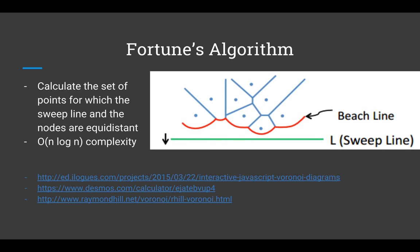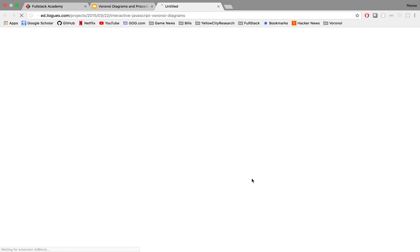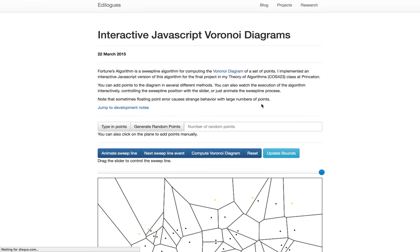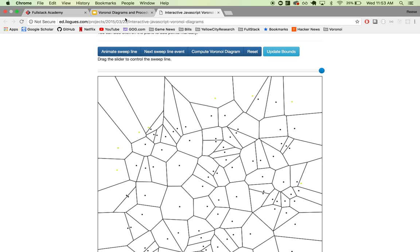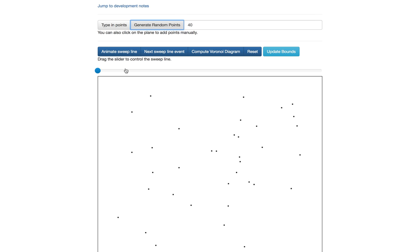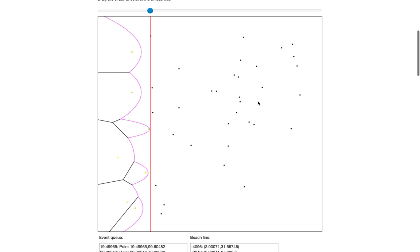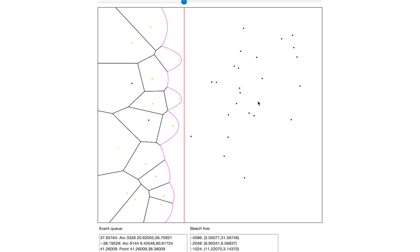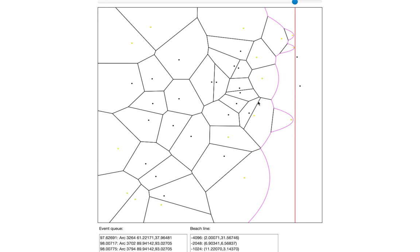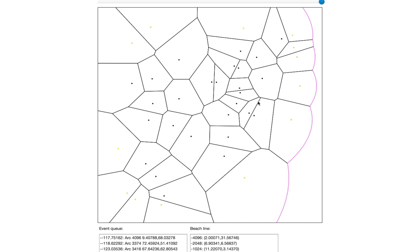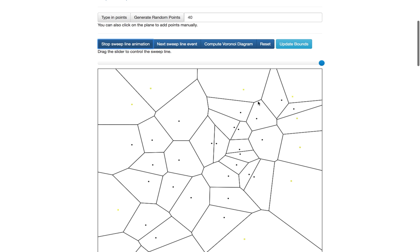So better than the flipping algorithms. These links are implementations of the algorithm, and they're pretty fun to play with. This one lets you give it a number of points and watch the beach line happen. This is Fortune's algorithm in action. Animating how this works out looks fantastic.